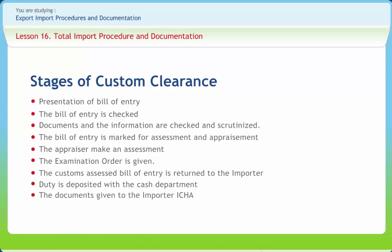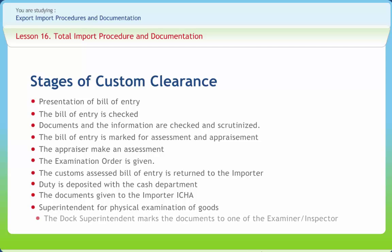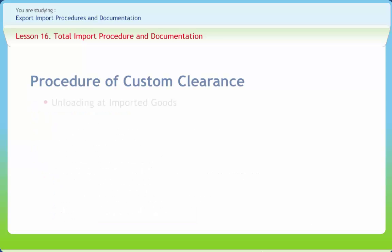Documents are given to the importer or CHA for presentation to the dock superintendent for physical examination of goods as per the examination order. The dock superintendent marks the documents to one of the examiners or inspectors for physical examination. The examiner writes his report and signs on the reverse of the Bill of Entry, sends it back to the superintendent for counter-signature, and an out-of-charge order is given. The CHA then presents the documents to the port manager, who ensures any charges or demurrages are paid by the importer and deposits the same with the cash department. The port manager then issues an order on the basis of which goods are taken out of the customs area, as per requirements of Sections 45 to 49 of the Customs Act 1962.